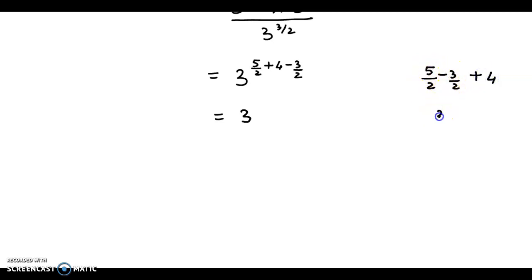Now 5 minus 3, so that is 2 upon 2 plus 4. Now this we could cancel off, so we have 1 plus 4. So the final value here would be 5. On the left hand side we have 3 raised to alpha.